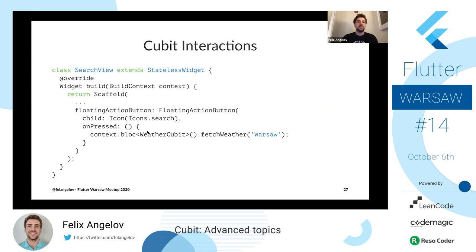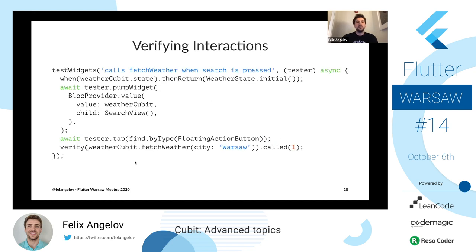For testing interactions — like a search view with a button that triggers fetch weather on the cubit — the approach is the same. We stub the state, pump a search view wrapped in the mock cubit, tap on the widget to interact with the UI, and then verify that the method we want was called as many times as we expect. Very similar to unit testing interactions.